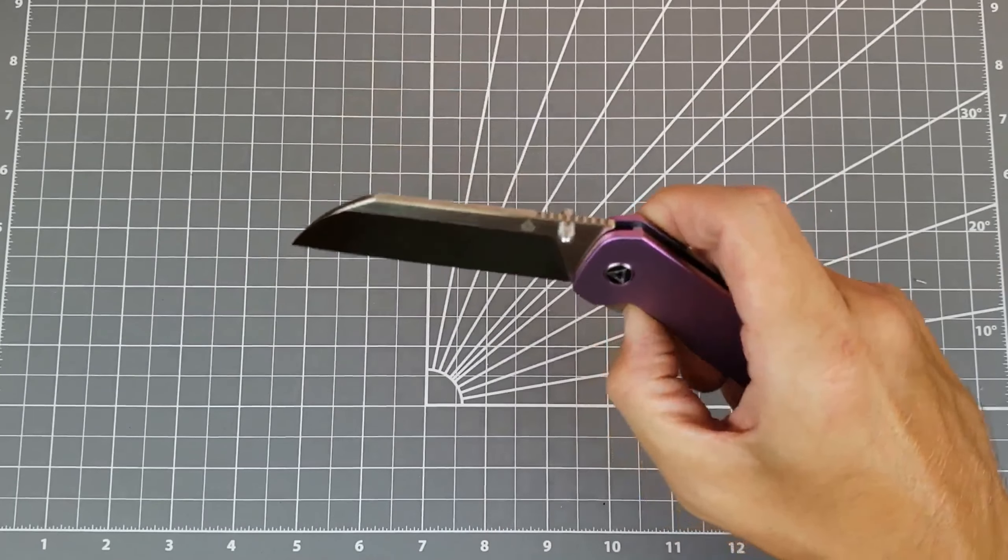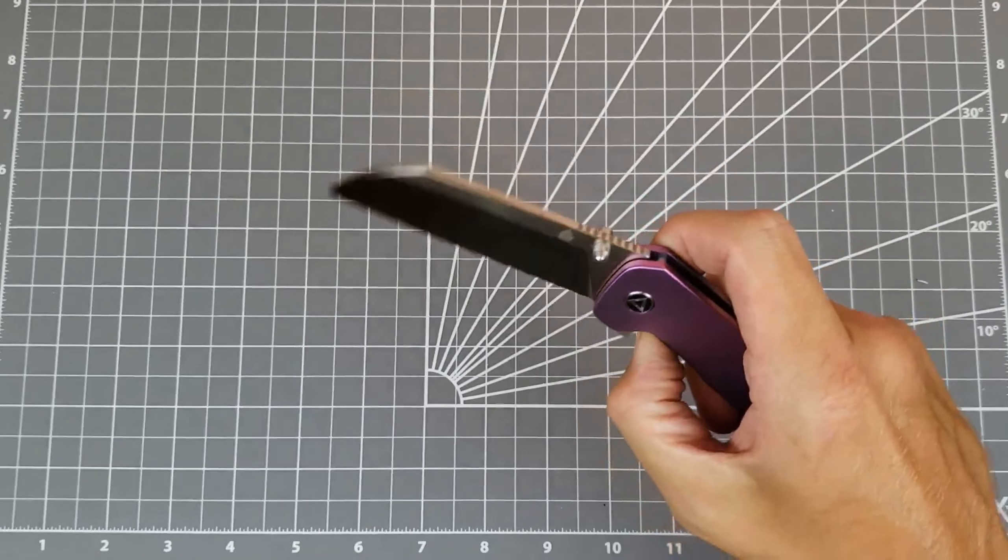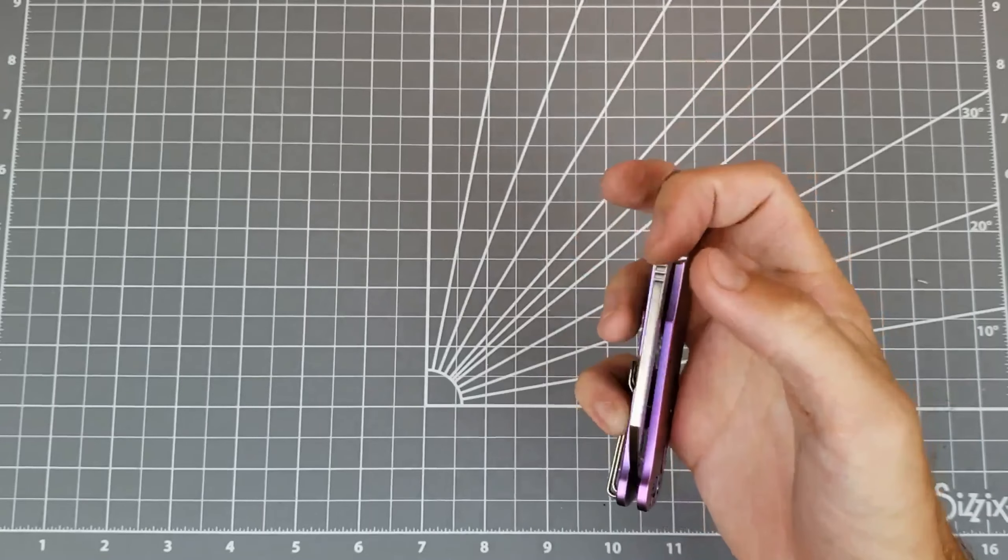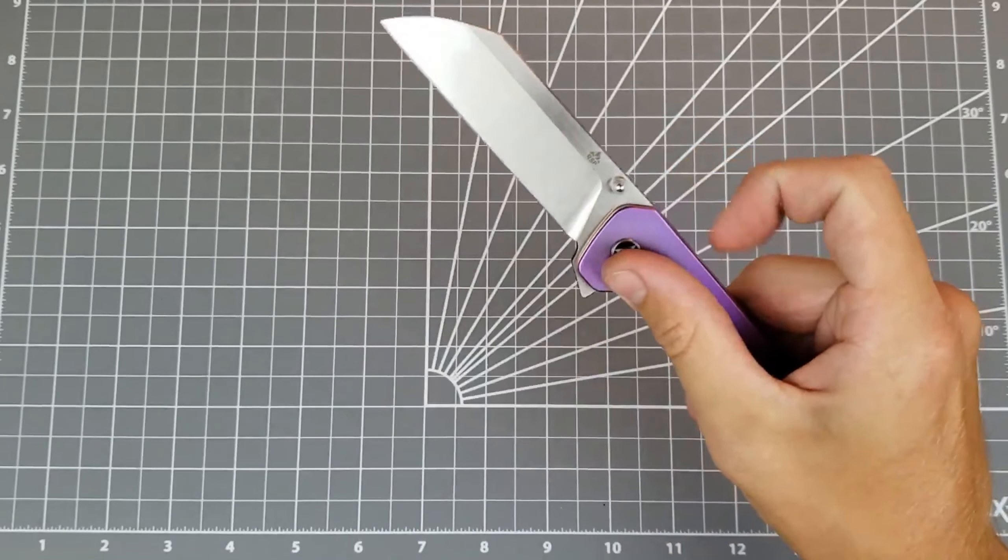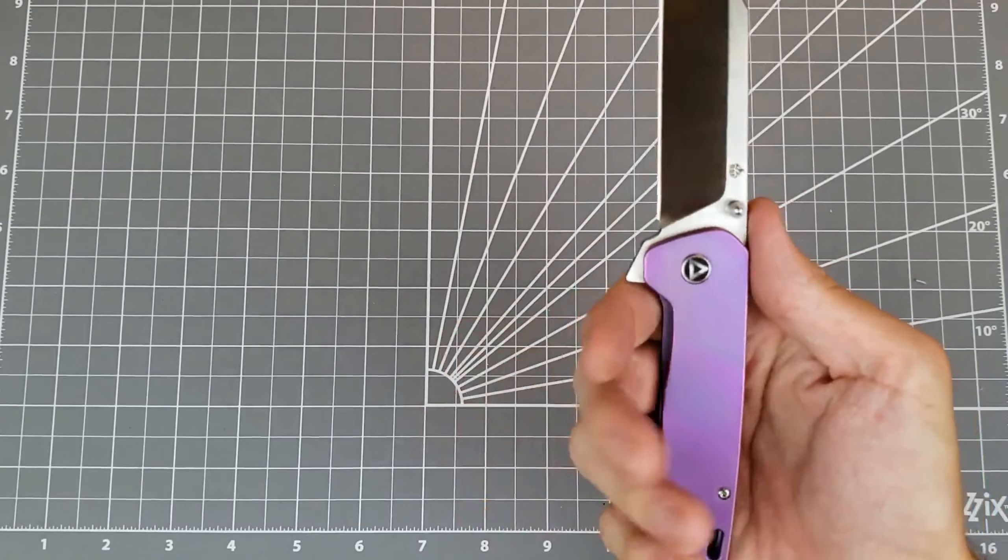The flipper is really nice. I like the flipper over the thumb studs a lot. I think this would be cool without thumb studs, just as a flipper only. You can get middle finger flick pretty easily.